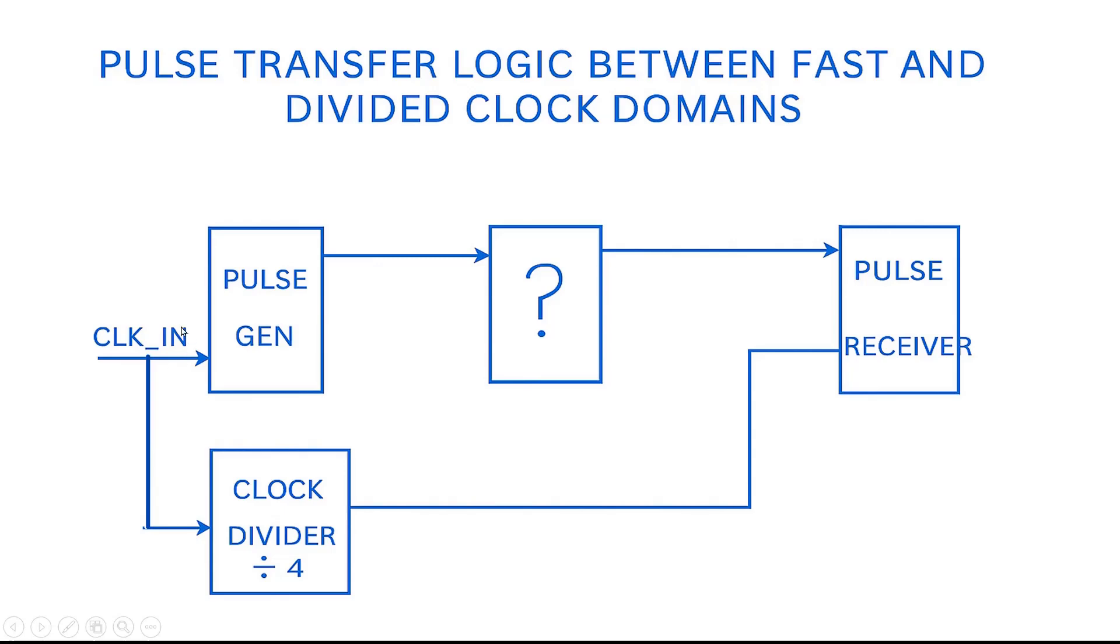This is the clock input. You can consider it as 100 megahertz. It is given to a pulse generator. So output of the pulse generator will be single clock cycle pulse. And this pulse we need to apply to this pulse receiver.